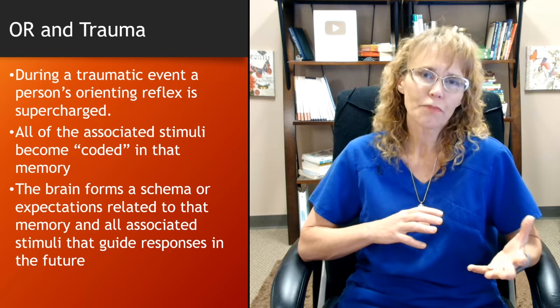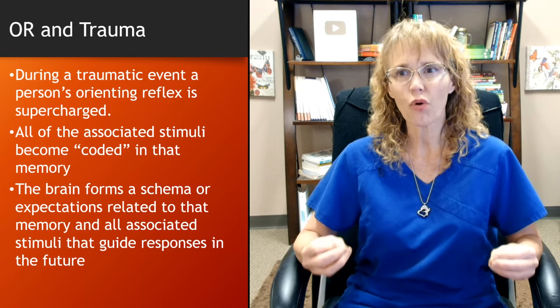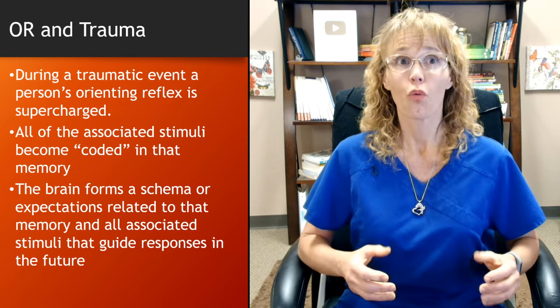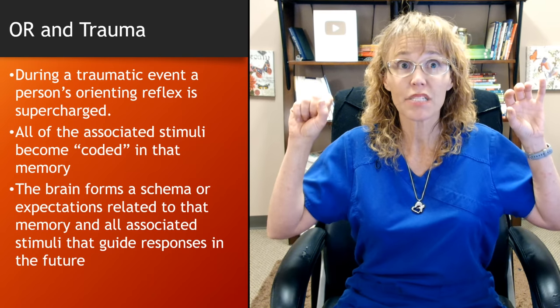During a traumatic event, a person's orienting reflex is supercharged. When you're experiencing a trauma, your brain becomes hyper-aware of stimuli in the environment — which makes sense. Your brain is saying, 'I want to take good notes because I don't want to be here again, so I'm going to be aware of all the things that may indicate a threat is coming.' Very survival-oriented. So all of the associated stimuli may become coded in that memory — and that can be a problem.